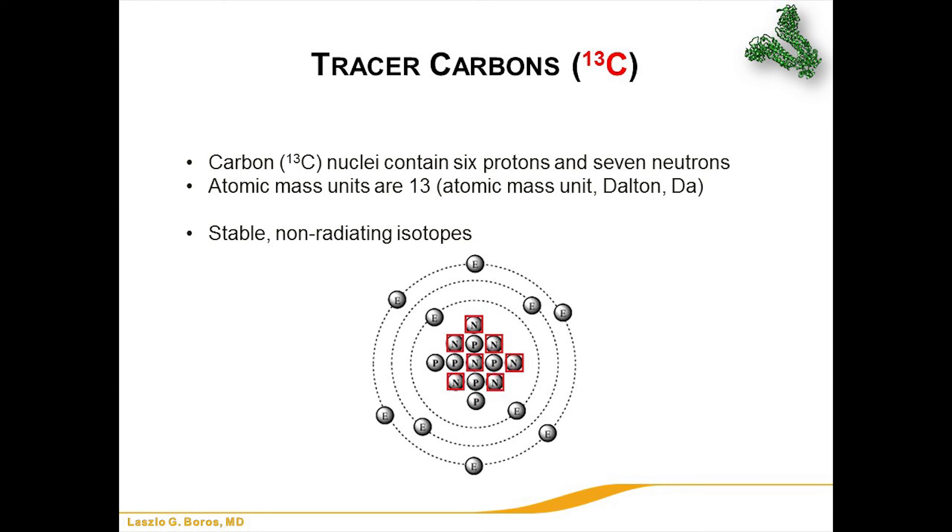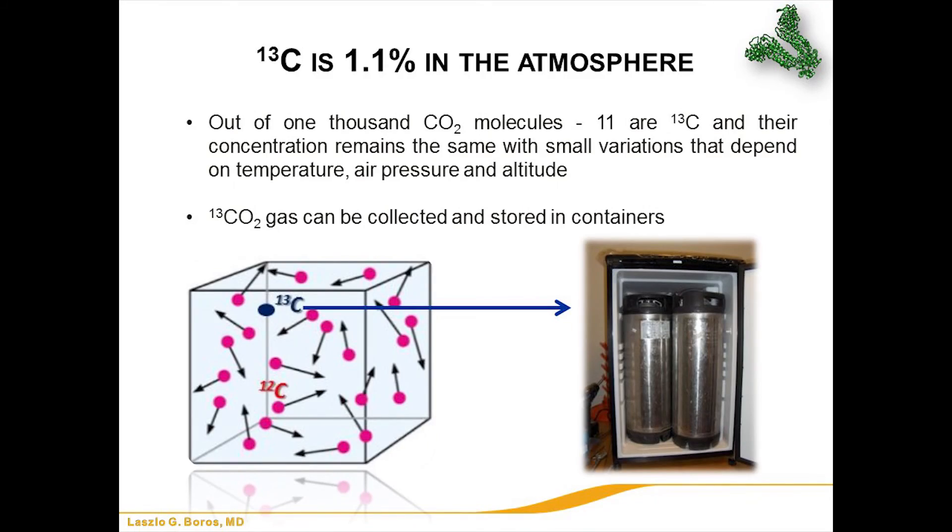C13 is a stable isotope with 6 protons and 7 neutrons. It's non-radiating, stable, and heavier than C12. Using this feature — being heavier — it's possible to trace C13 through various metabolic pathways by the mass shift or increase in mass in any product synthesized from labeled glucose. It's a replacement of C12 with C13, and our atmosphere already contains this — in fact, 1.1% of all carbons on our planet are C13, these heavier carbons.